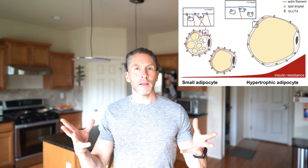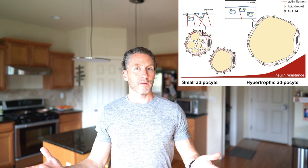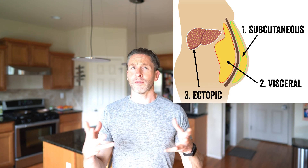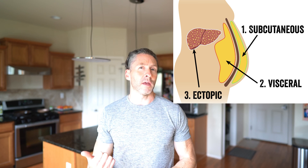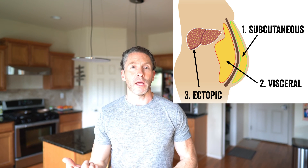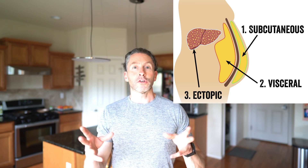At this point, fat circulates in your bloodstream longer because it doesn't have a good place to go, and your insulin is chronically elevated trying to clear fuels from the bloodstream. Eventually, when you fill all your subcutaneous and visceral cells, fat starts getting stored ectopically where it really doesn't belong — shoved inside your liver causing fatty liver, and inside your pancreas causing fatty organs. By the time that happens, you've reached your personal fat threshold.